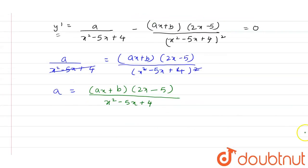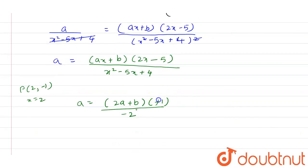And given that the point is (2, -1), if we put the value X = 2, we get A = (2A + B)(-1) / (-2). The negatives cancel and we know that 2A + B = 2, so A = 2/2, therefore A = 1.